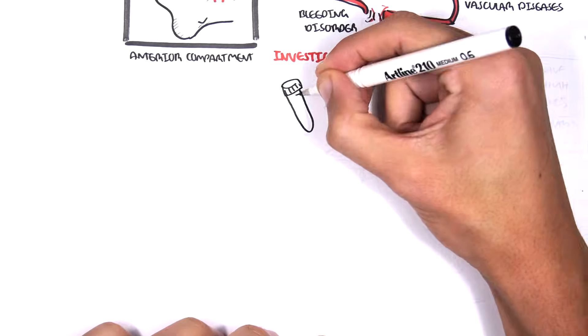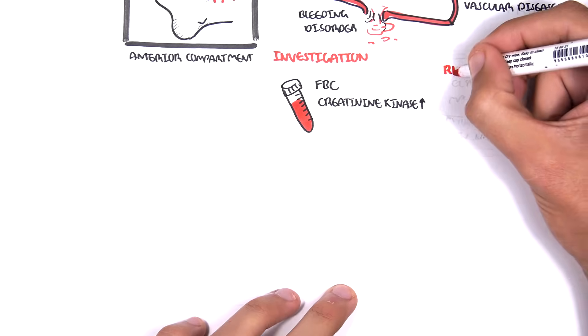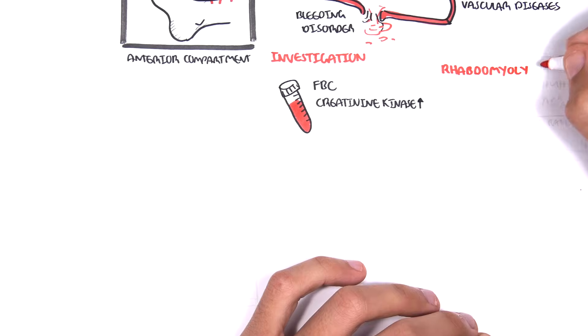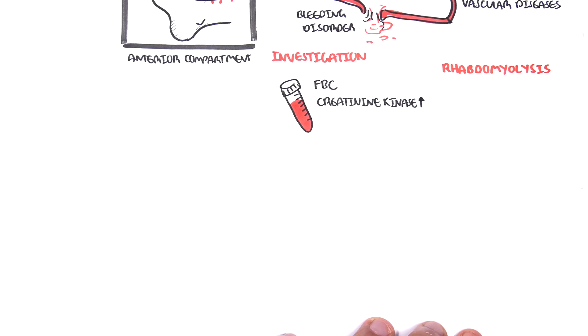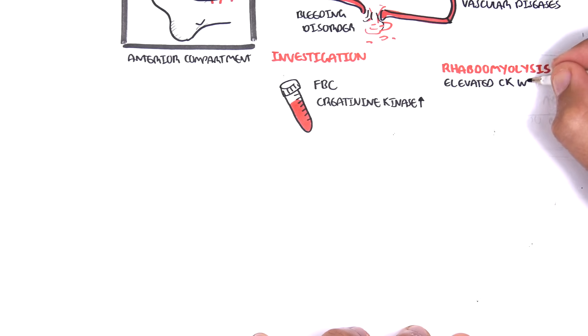Investigations include full blood count, creatinine kinase, which is raised because of the damage to the muscle cells. It is important to remember rhabdomyolysis in this case. Rhabdomyolysis is where you have injury or damage to muscle tissue. This leads to similar findings to acute compartment syndrome.